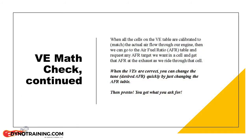When all the cells on the VE table are calibrated to match the actual airflow through our engine, then we can go to the air-fuel ratio table and request any AFR target we want within the range of the AFR table, then read that same AFR at the exhaust as we ride through that cell. When the VE cells are correct, you can change the tune — which is the AFR table — very quickly and easily. If the VE cells are correct, you get the air-fuel ratio you ask for.